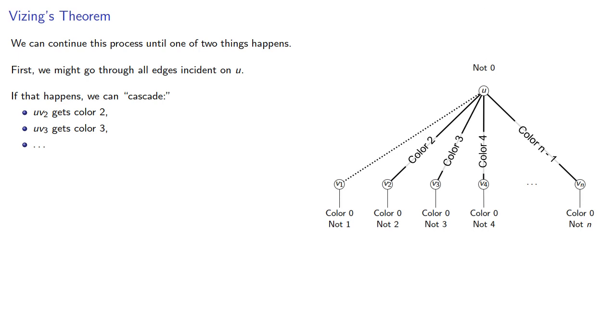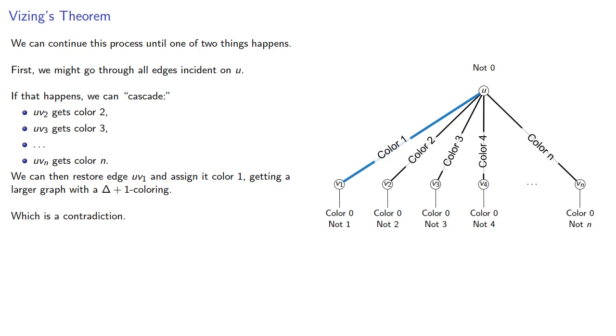and our last edge uvn gets color n, and we can restore our edge uv1 and assign it color 1, getting a larger graph with a delta plus 1 coloring, which is a contradiction.